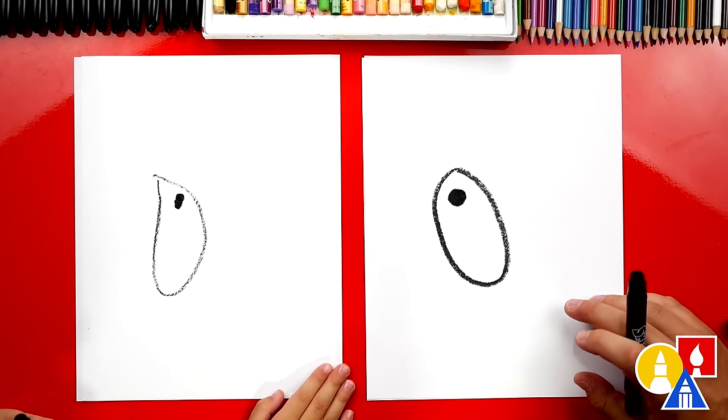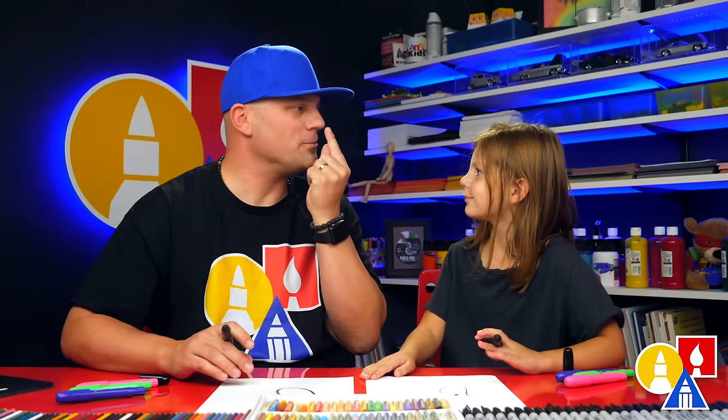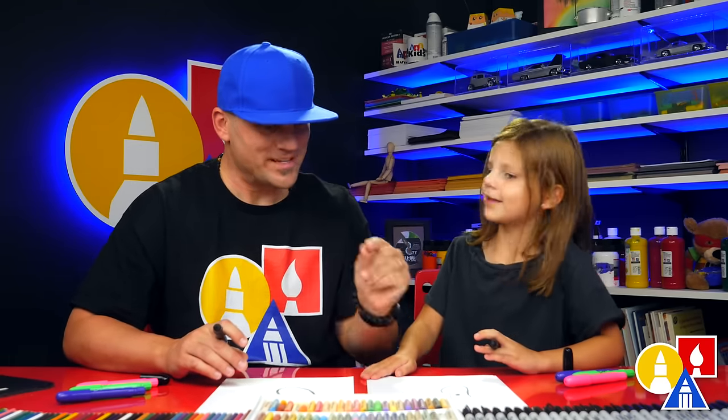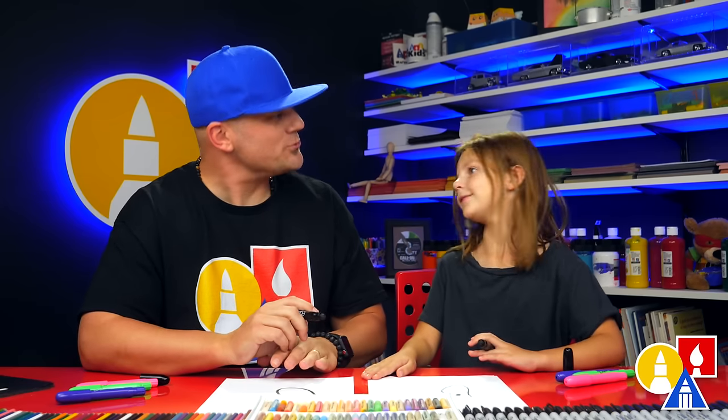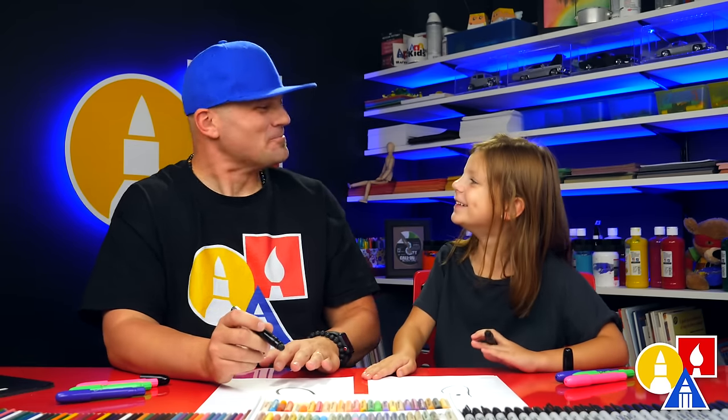Now let's draw the beak. Do hummingbirds have long beaks or short beaks? Long beaks. Yeah, long beaks so that they can put their nose inside the flower and get the juice.